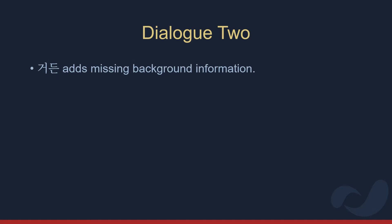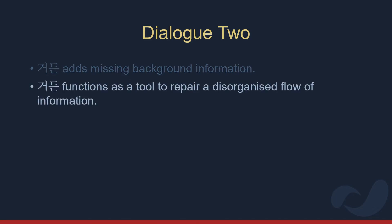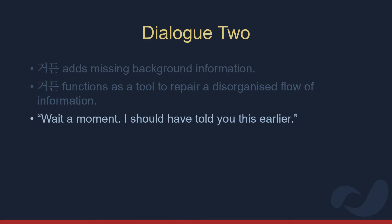Here the speaker is again using 거든 to manage the flow of information, this time adding a background to help the listener understand what was just said. In the line with 거든, the speaker adds details which should have been said earlier in the storytelling. Not doing so made it more difficult for the listener to comprehend. So now we see 거든 functioning as a tool to repair a disorganised passage. Here it's like saying, wait a moment, I should have told you this earlier. The speaker realises she's made an error in her storytelling and makes a self-correction with 거든, providing the information necessary for listener comprehension.